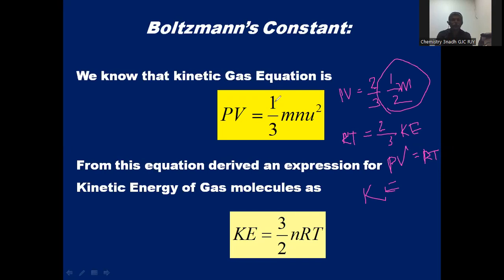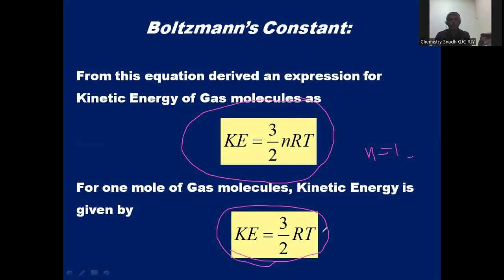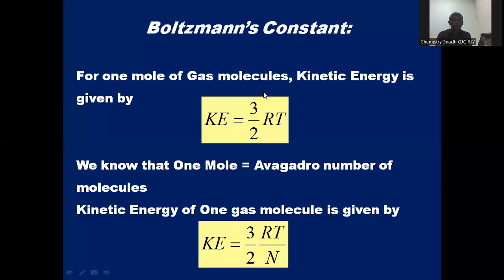In the kinetic gas equation, I multiplied and divided by 2. This 1/2 mn u² corresponds to the kinetic energy. And from the ideal gas equation, PV = nRT, we derived that kinetic energy = 3/2 nRT. This is the expression for the kinetic energy of n moles of gas. If n = 1, then kinetic energy = 3/2 RT, which is the expression for the kinetic energy of 1 mole of gas molecules.